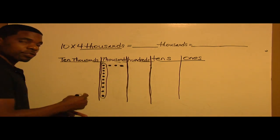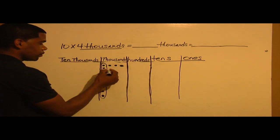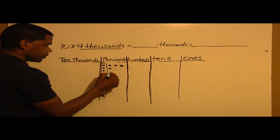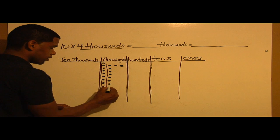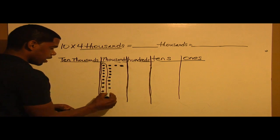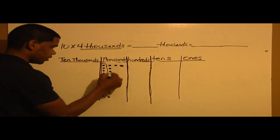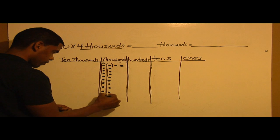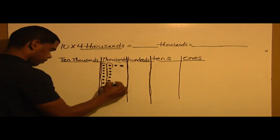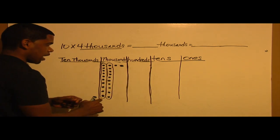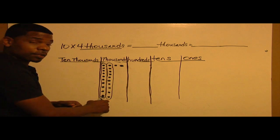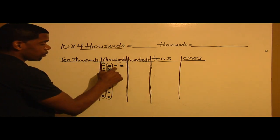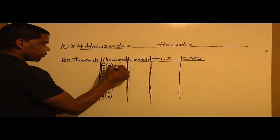I need to do the same thing for the second group: 1, 2, 3, 4, 5, 6, 7, 8, 9, 10. Here's my second group. Now I have 10,000, 20,000. I need to repeat the same steps for the third group.